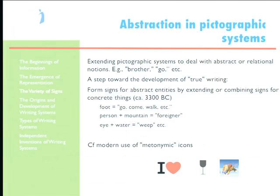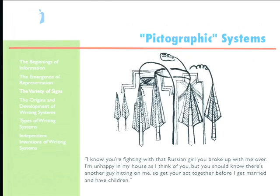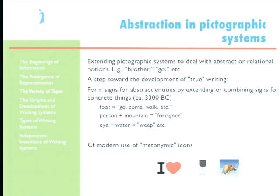Now, how do you get past the limitations of things you can't picture in a graphic system using pictures to convey ideas? One thing you can do — an important step for the development of writing — is to use these things metaphorically. You can picture a foot, so you use a picture of a foot for 'go.' A person on a mountain can be the symbol for 'foreigner.' The eye in water becomes the symbol for 'weep.' So many of our icons actually work this way.